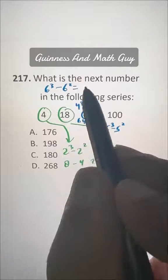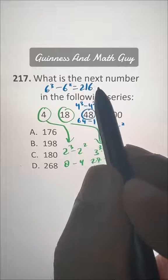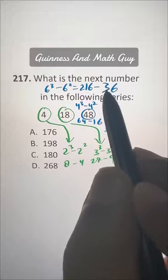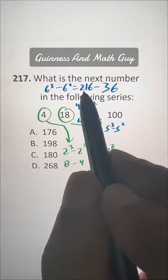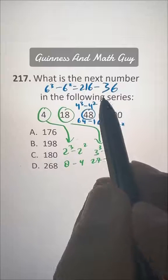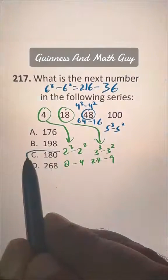6 cubed is 216 minus 6 squared is 36. And if you do 216 minus 36, you will get 180. That's our answer choice C.